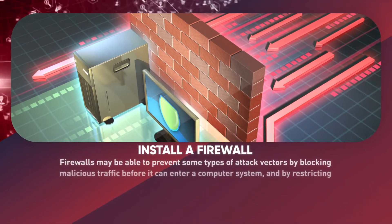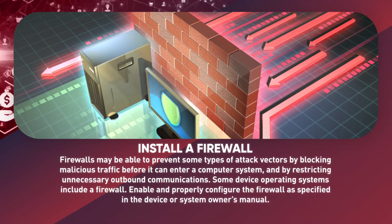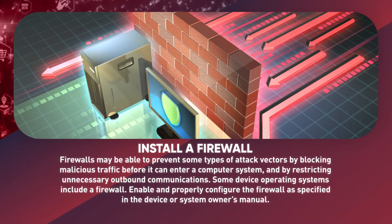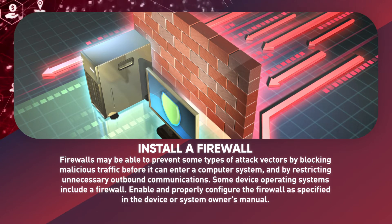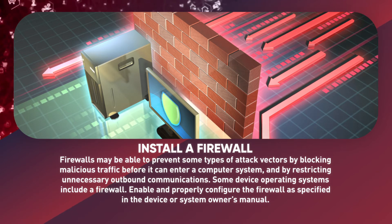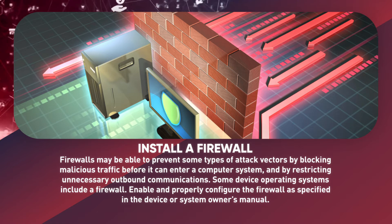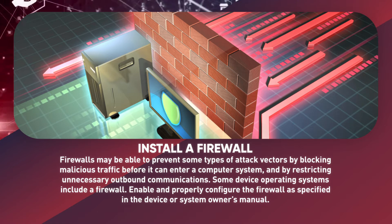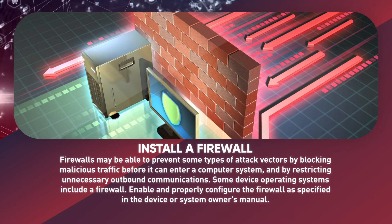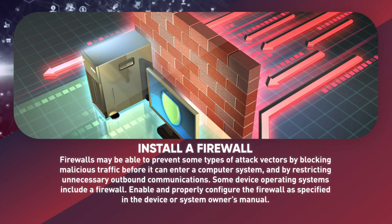Install a firewall. Firewalls may be able to prevent some types of attack vectors by blocking malicious traffic before it can enter a computer system, and by restricting unnecessary outbound communications. Some device operating systems include a firewall. Enable and properly configure the firewall as specified in the device or system owner's manual.